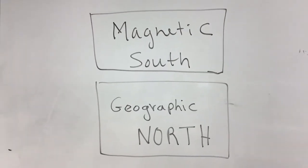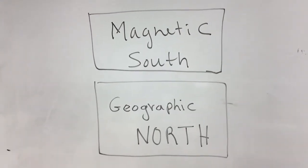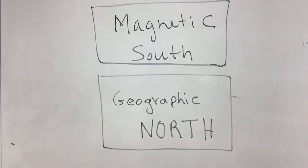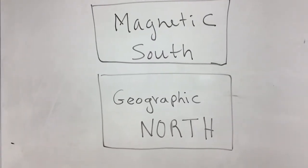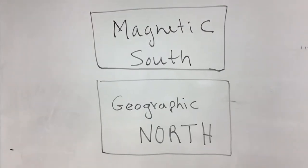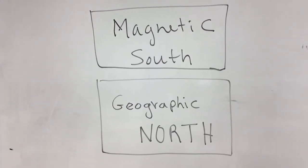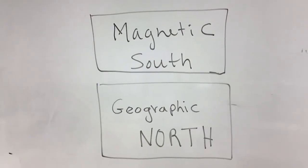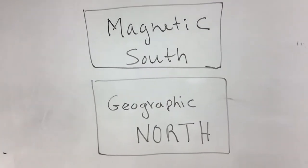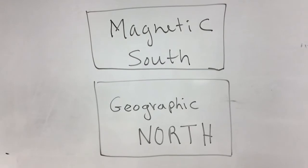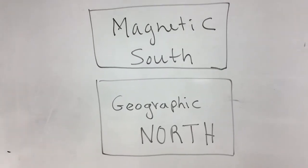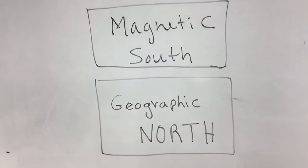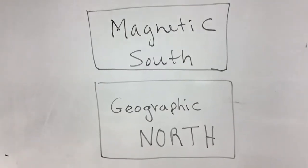What is written on the whiteboard tells you that the magnetic south pole of Earth is the direction normally referred to as geographic north. So if I bring a compass, since opposite poles attract, the north pole of the compass must be attracted to the magnetic south pole of Earth.